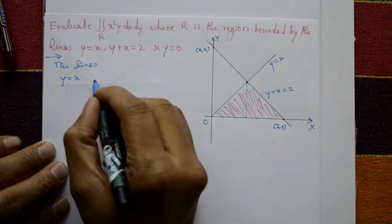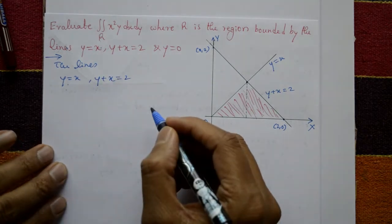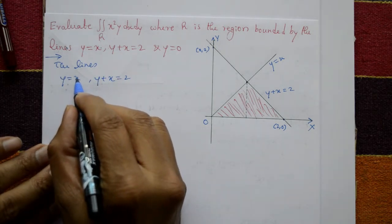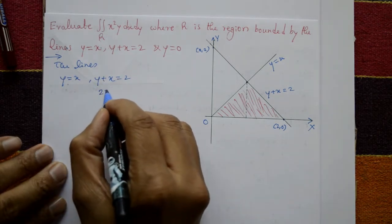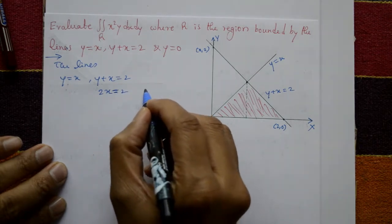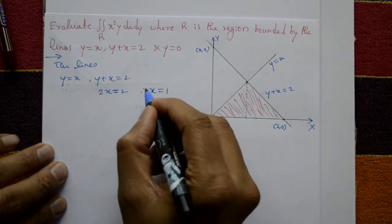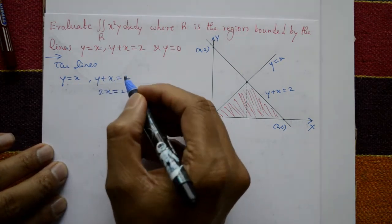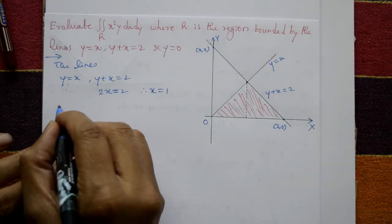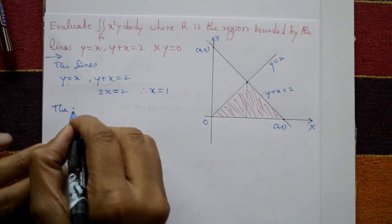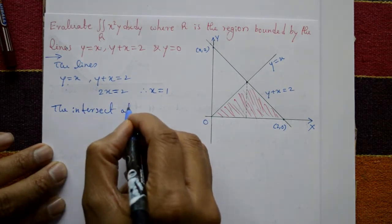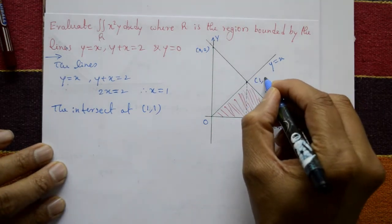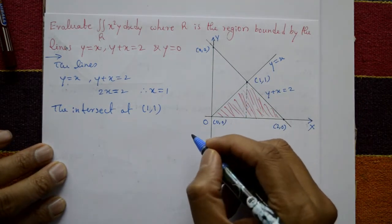Now, y equals x and y plus x equals 2. Put y equals x: we get 2x equals 2, so x equals 1. Put x equals 1, you get y equals 1. They intersect at point (1, 1). This is the origin (0, 0).